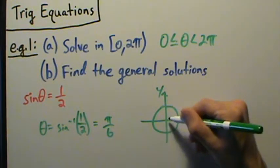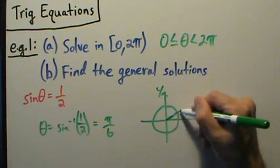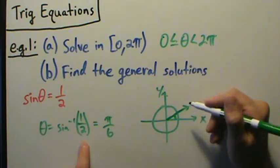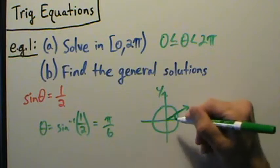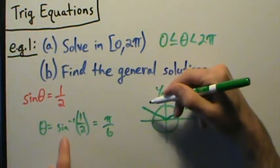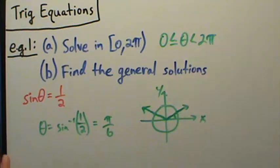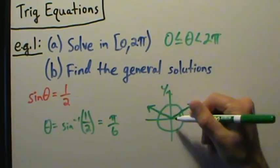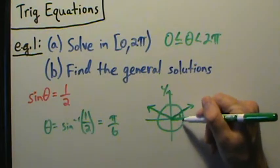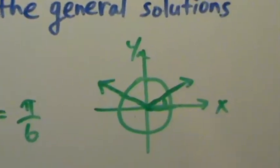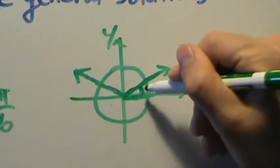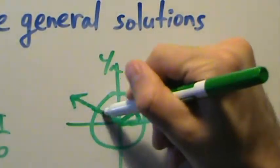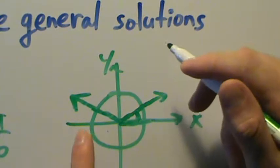So sine of theta equals one half — there's some value of theta in quadrant 1 and another value of theta in quadrant 2 that gives us that. The one we found by taking the inverse sine is π/6 in quadrant 1, but we know there's another one over in quadrant 2 that the inverse sine did not give us. So sine of theta equals one half actually has two solutions in the interval 0 to 2π.